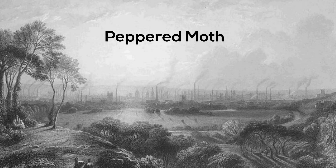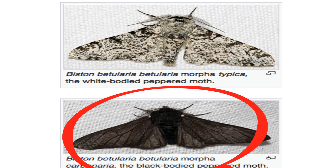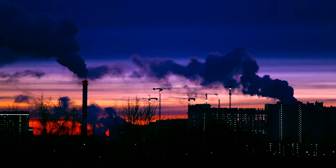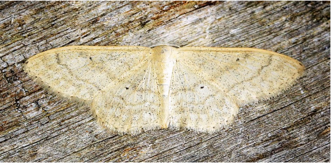A classic case of natural selection is the peppered moth. In the 19th century, a pale or white peppered moth was much more common than a black peppered moth. However, people started to notice that it was actually the black form of the moth that was becoming more common. Industrialism and coal fires had caused the air to become polluted, killing off lichens and blackening urban tree trunks.